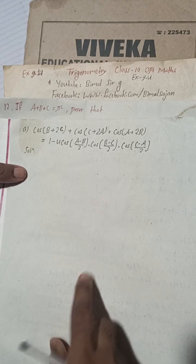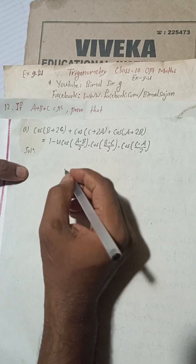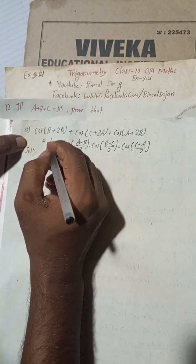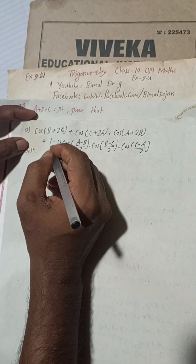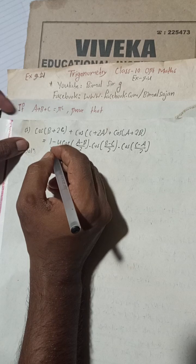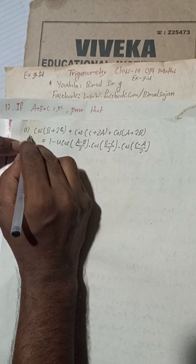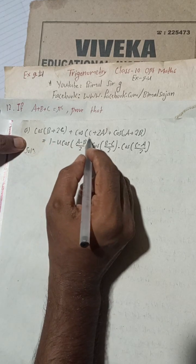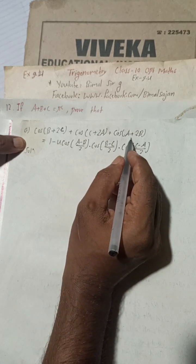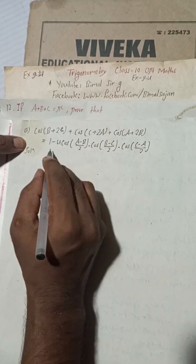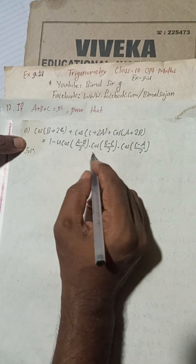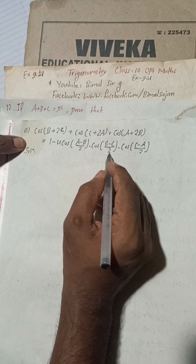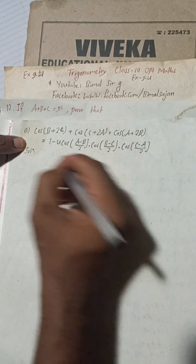Let's begin the solution for 12a. If a plus b plus c equals pi radians, prove that cos(b + 2c) + cos(c + 2a) + cos(a + 2b) is equal to 1 minus 4 cos((a−b)/2) · cos((b−c)/2) · cos((c−a)/2).